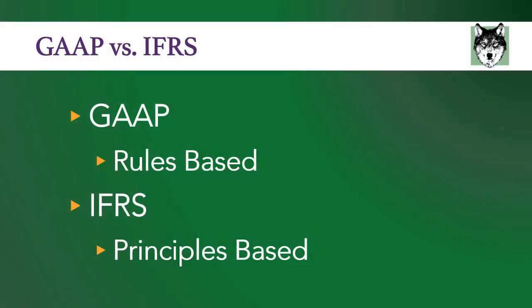The basic accounting fundamentals are the same no matter where you're at around the world. You have the same set of financial statements and the same basic accounting processes. There are just certain circumstances that are significantly different. The biggest difference between GAAP and IFRS is that GAAP is rules-based, whereas IFRS is principles-based. GAAP actually writes out all these different rules that U.S. companies have to follow.